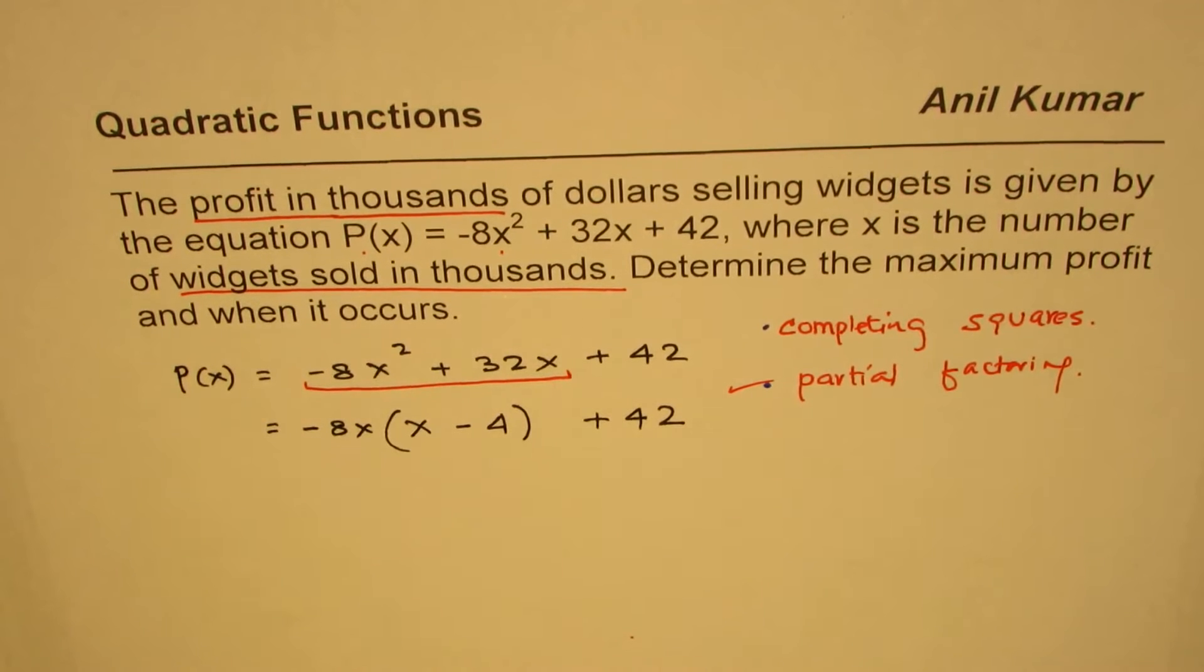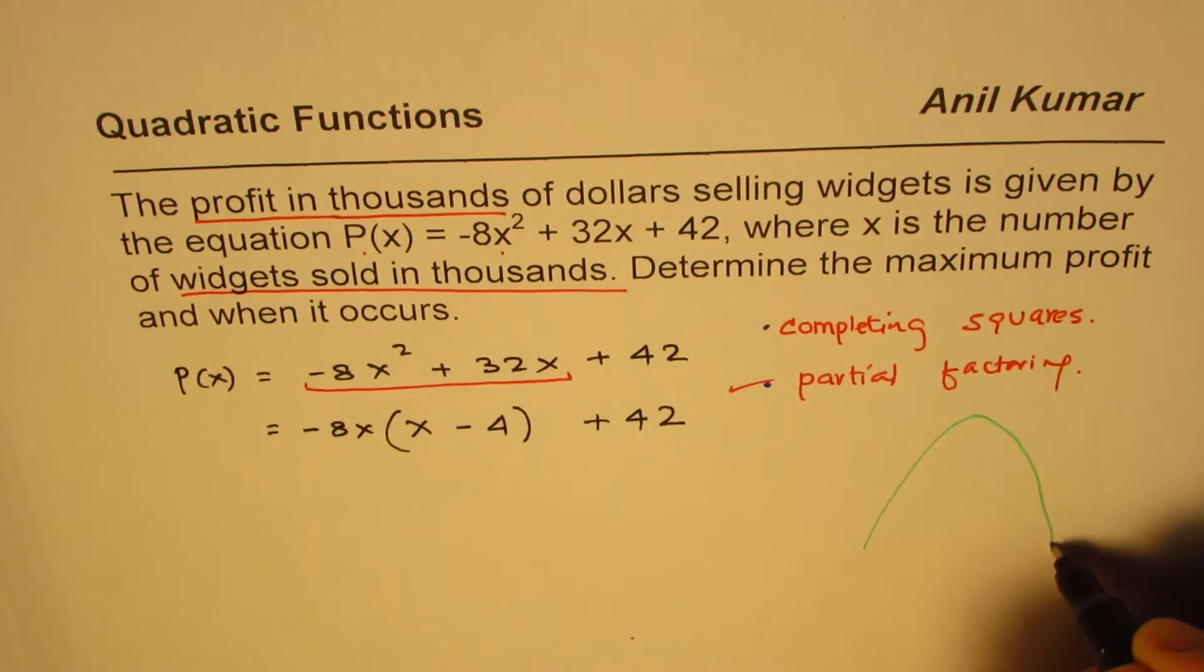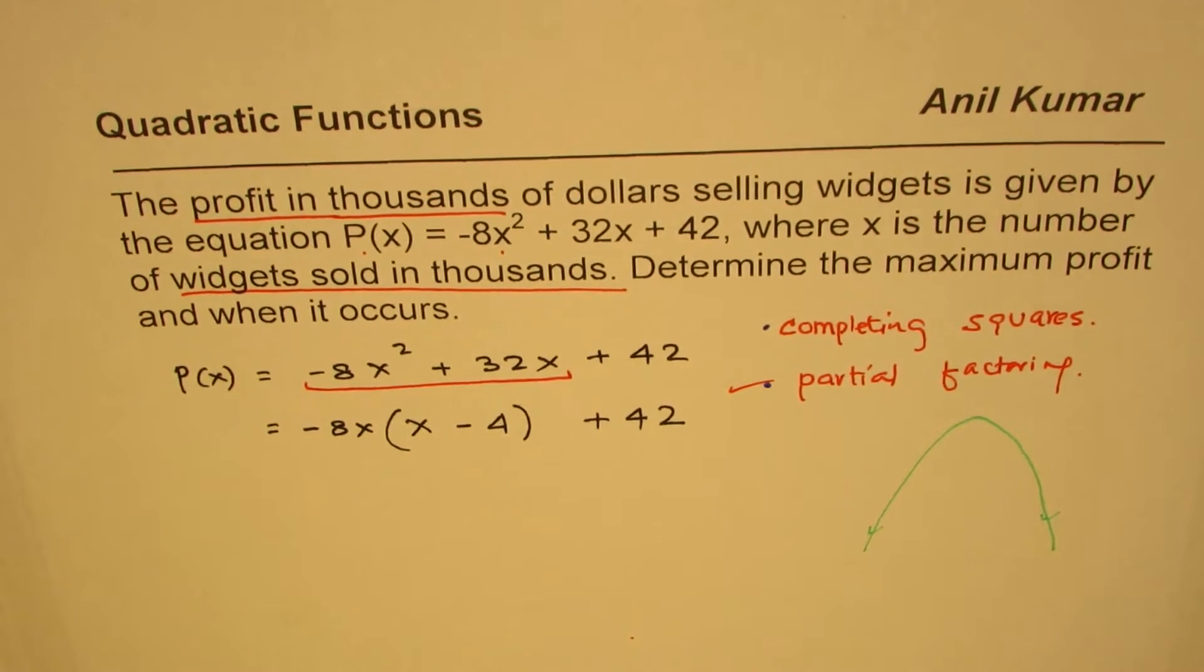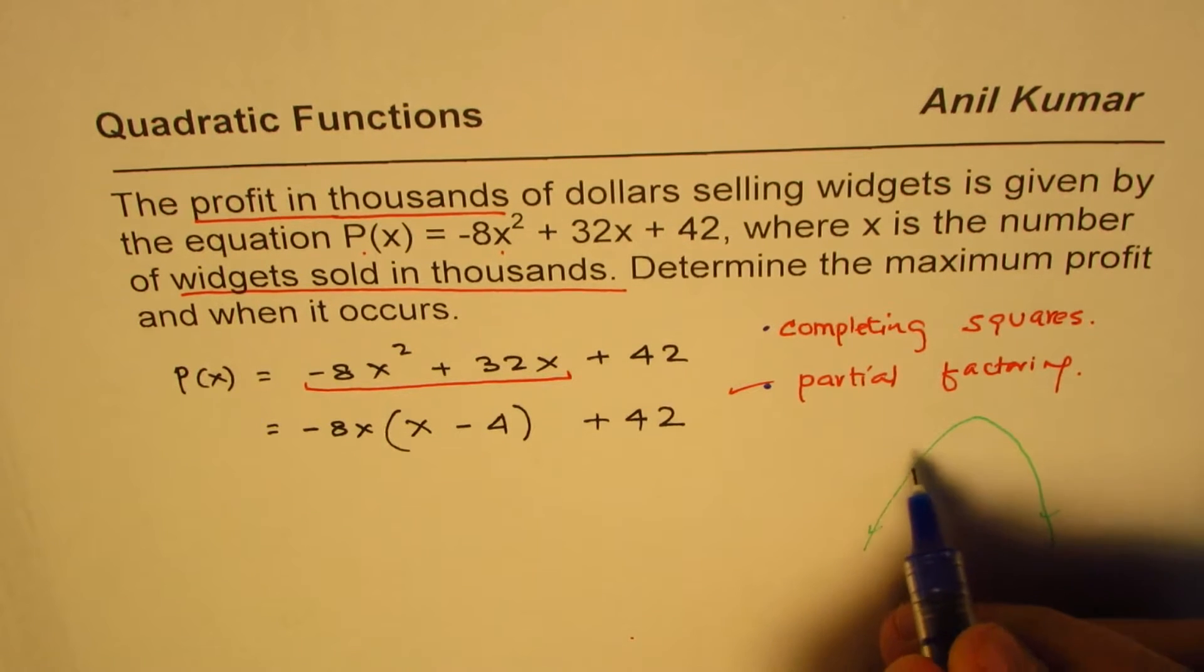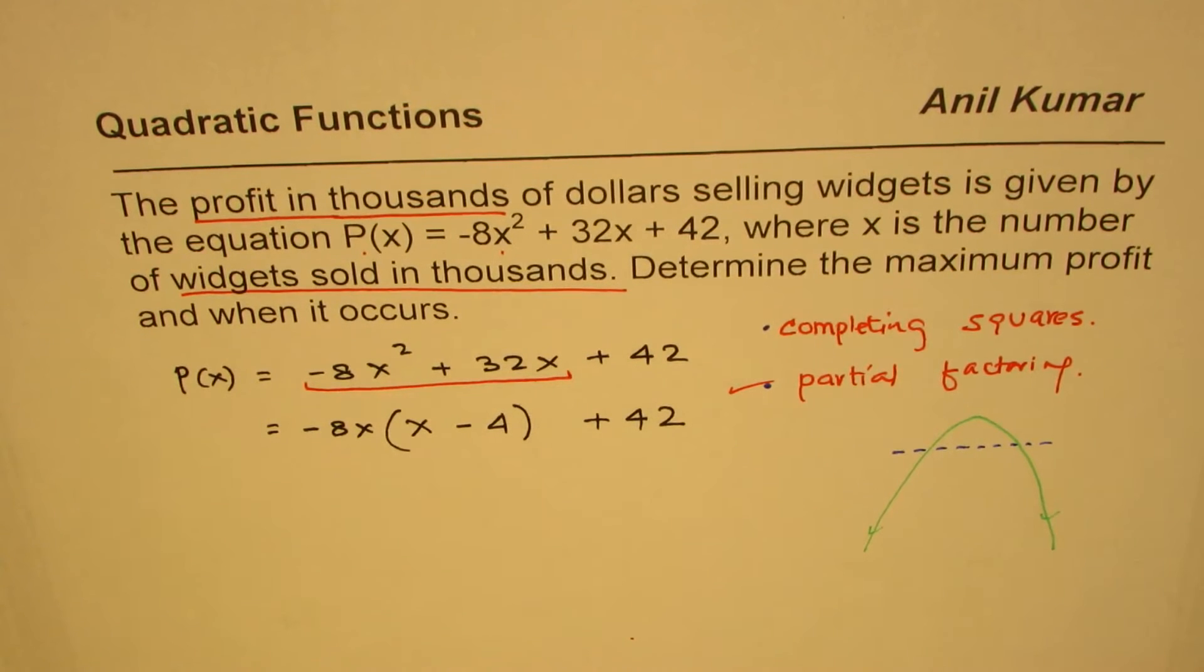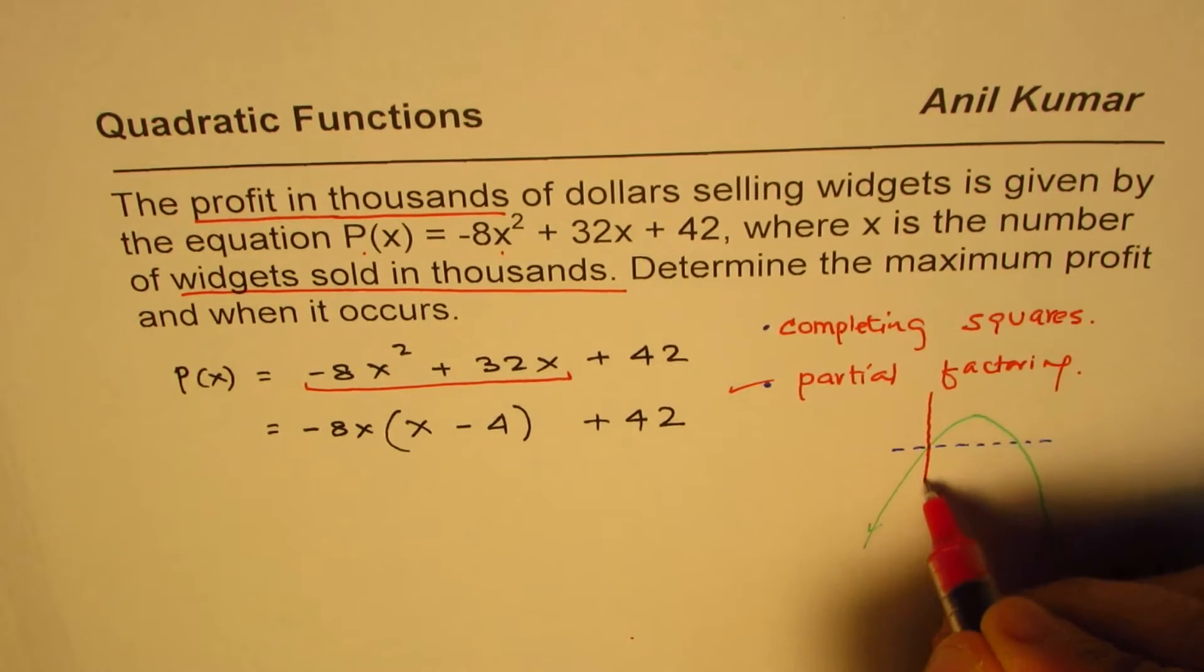Now this tells you one thing, that for x equals to 0 and for x equals to 4, the value of the function is 42. Do you understand that part? Let me just sketch and show you what it means. So the function is going downwards like this since this is minus.